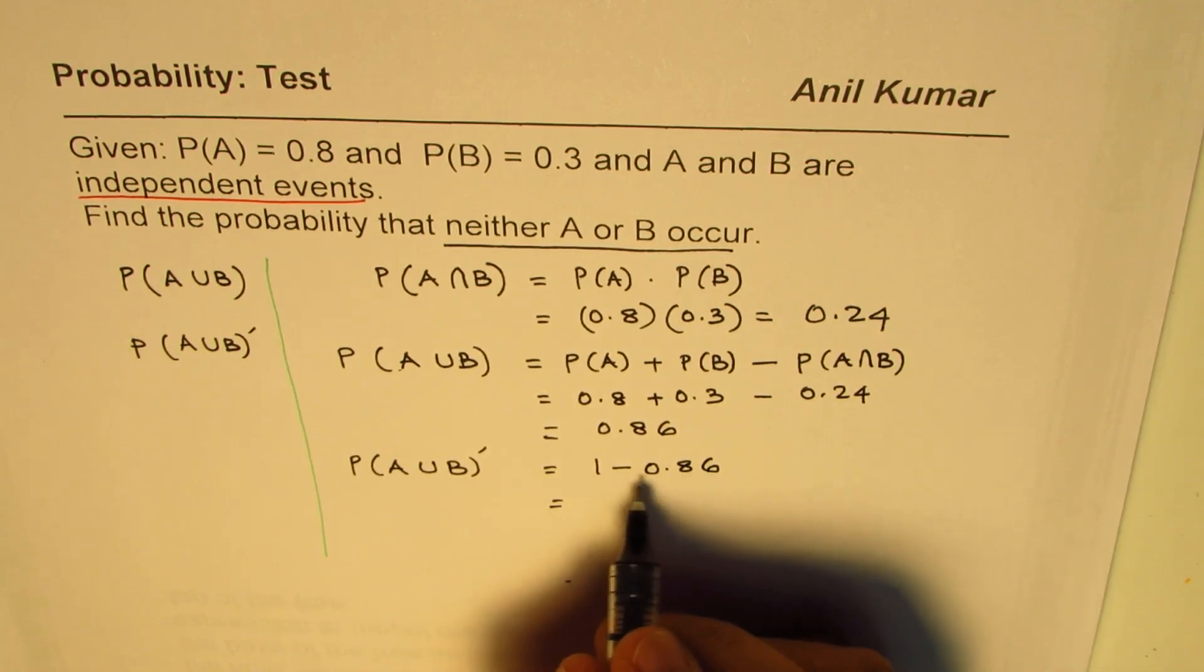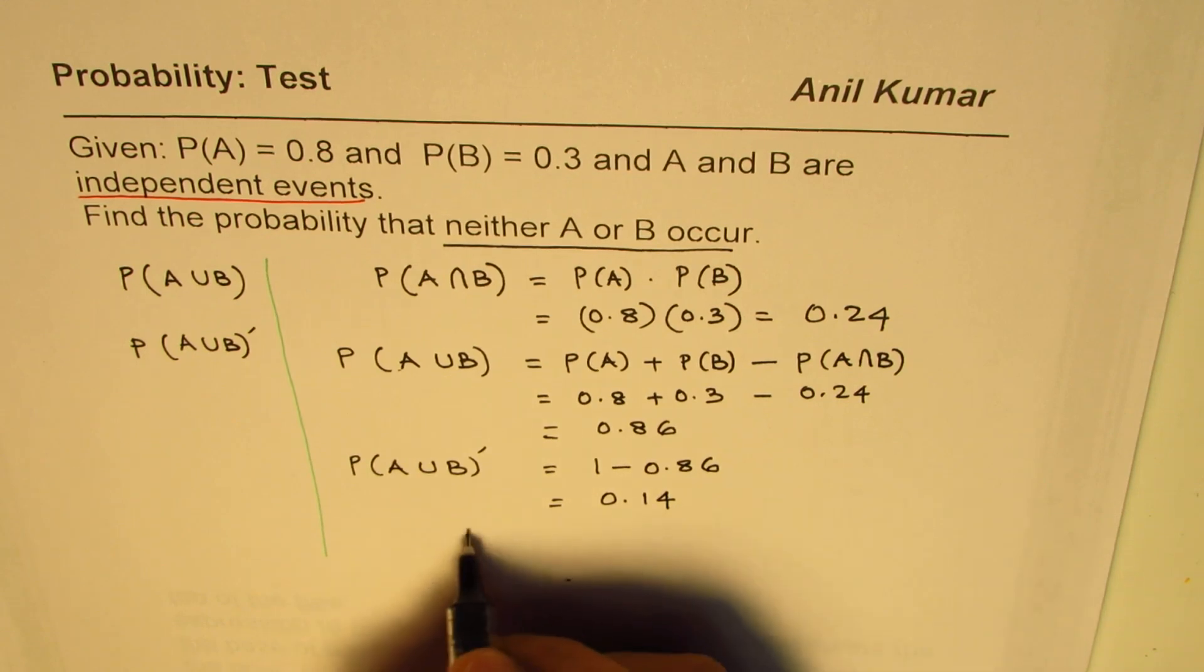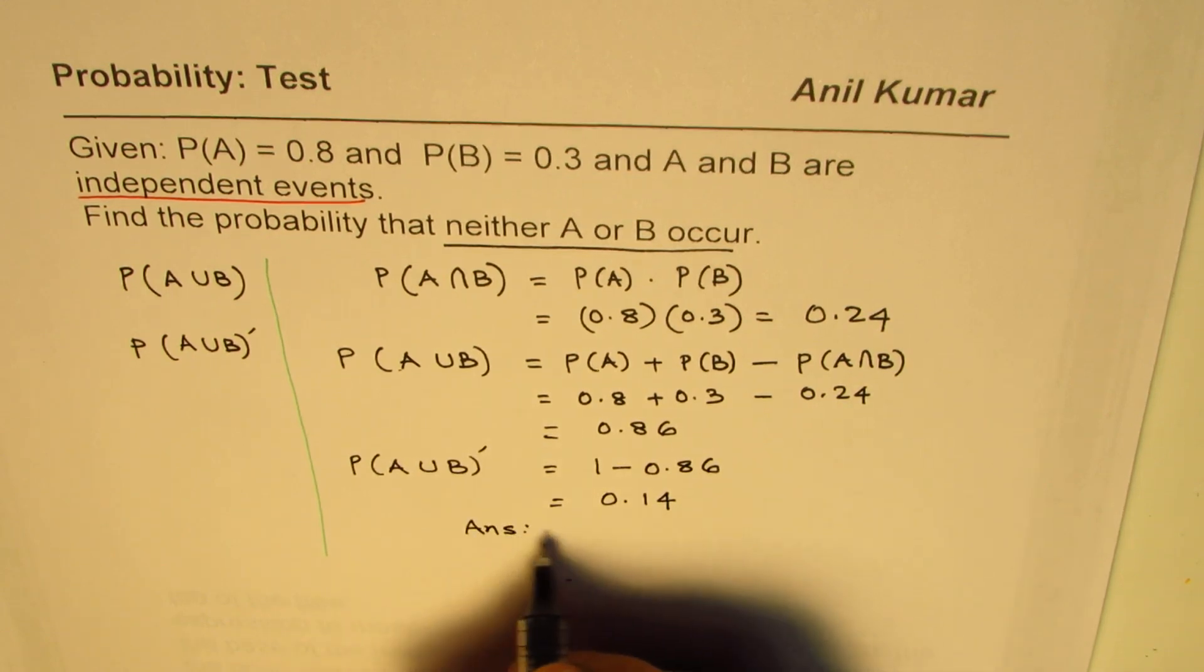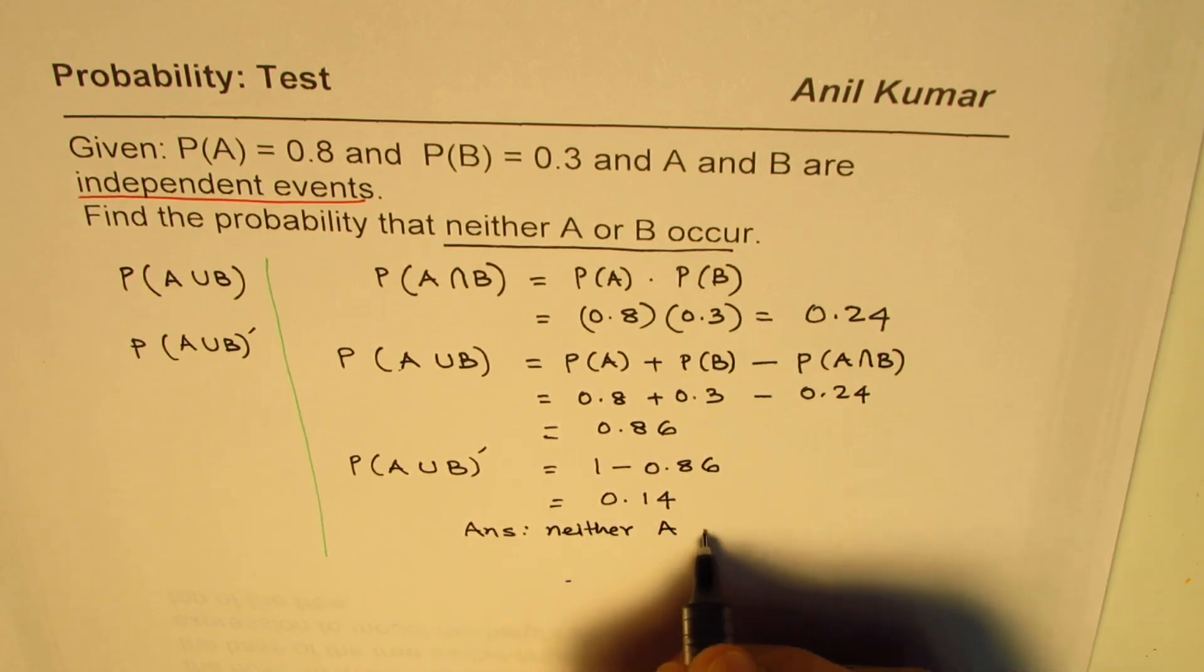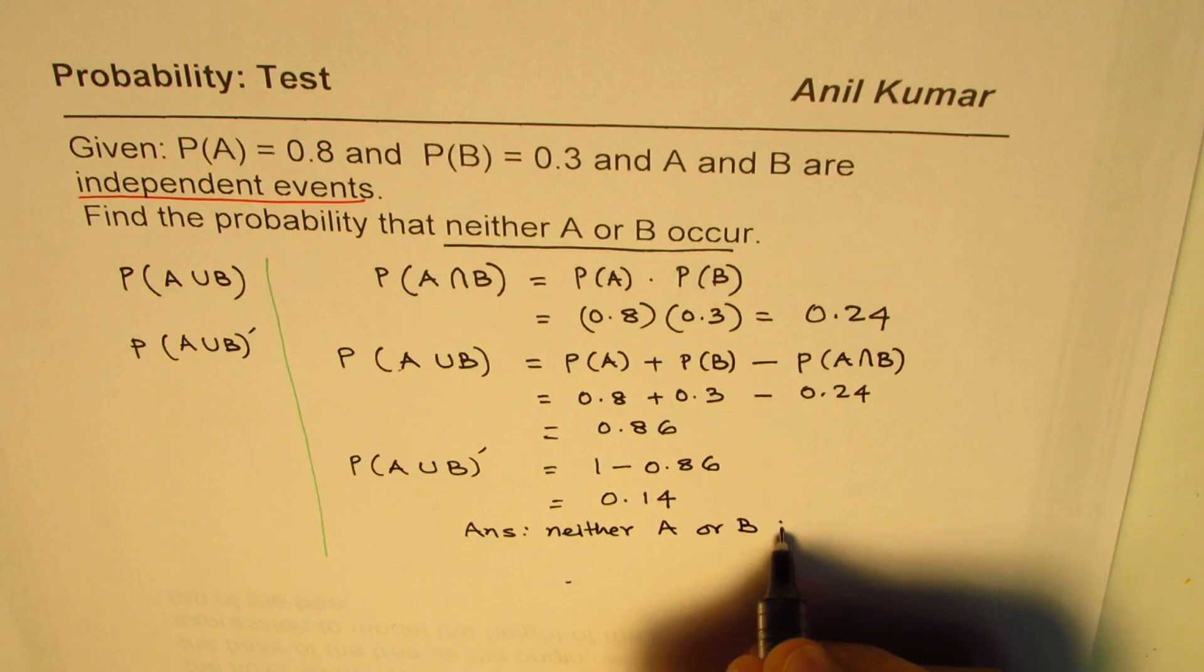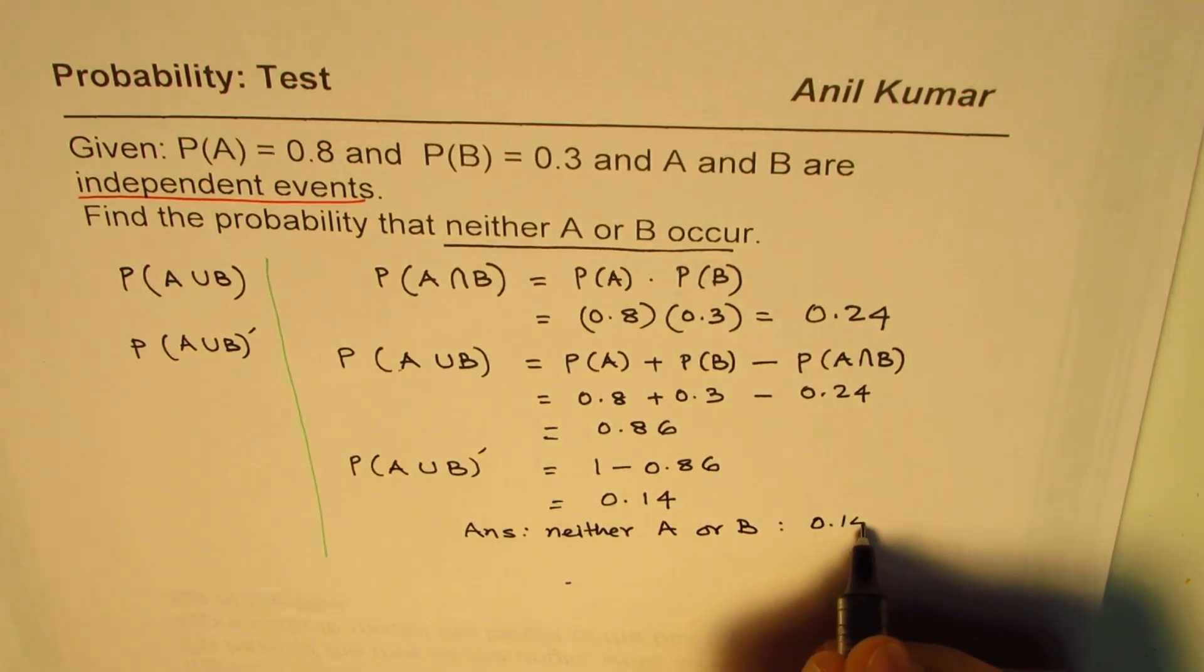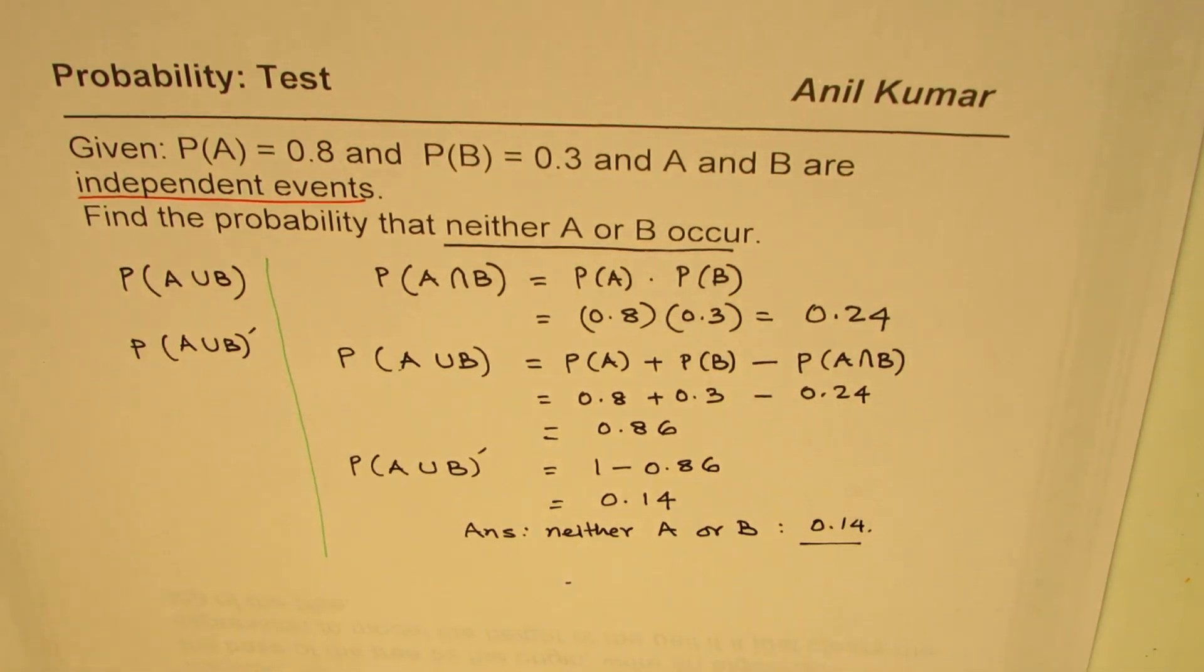If you take away 0.86 from 1, you get 0.14. So that is the answer for us. The answer is neither A or B, the answer is 0.14. That is how it should be solved. I hope you find it interesting. Thank you and all the best.